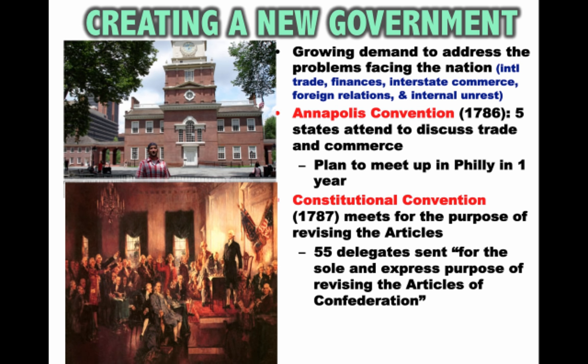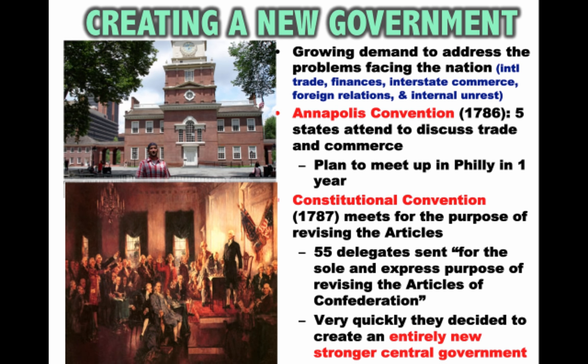That meeting became the Constitutional Convention of 1787. The purpose of the meeting was for revising the Articles — the 55 delegates were sent for the sole and express purpose of revising the Articles of Confederation. Twelve states showed up at the Constitutional Convention — no Rhode Island. All-stars were present: George Washington as president of the convention, Ben Franklin at 81 years old, and many others. However, these 55 delegates very quickly decided to create an entirely new, stronger central government, getting rid of the Articles of Confederation entirely.